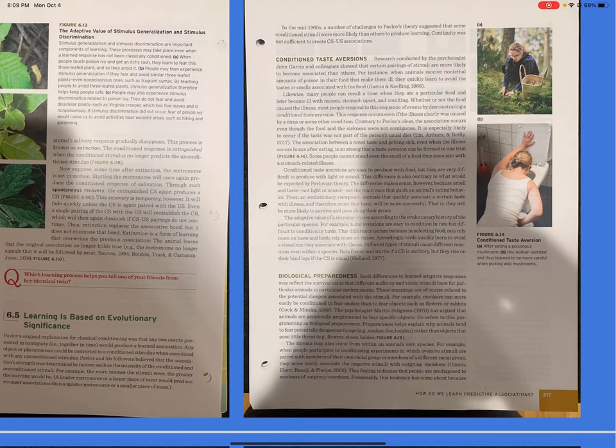Conditioned taste aversions are easy to produce with food, but they are very difficult to produce with light or sound. This difference is also contrary to what would be expected by Pavlovian theory. The difference makes sense, however, because smell and taste, not light or sound, are the main cues that guide an animal's eating behavior. From an evolutionary viewpoint, animals that quickly associate a certain taste with illness, and therefore avoid that taste, will be more successful. That is, they will be more likely to survive and pass along their genes. The adaptive value of a response varies according to the evolutionary history of the particular species.